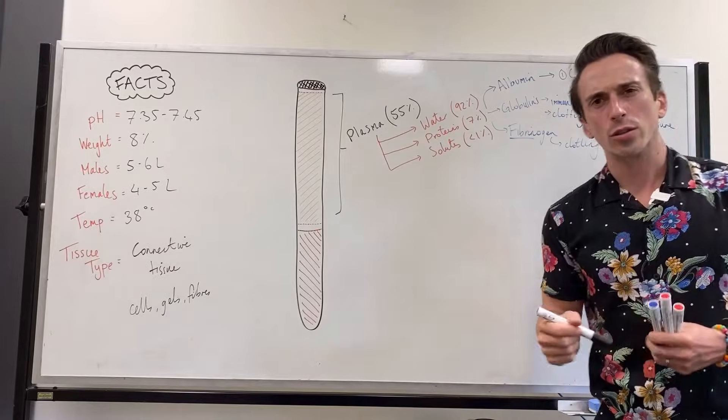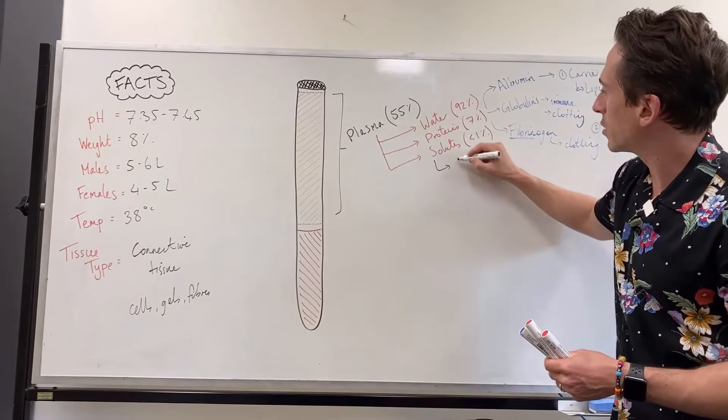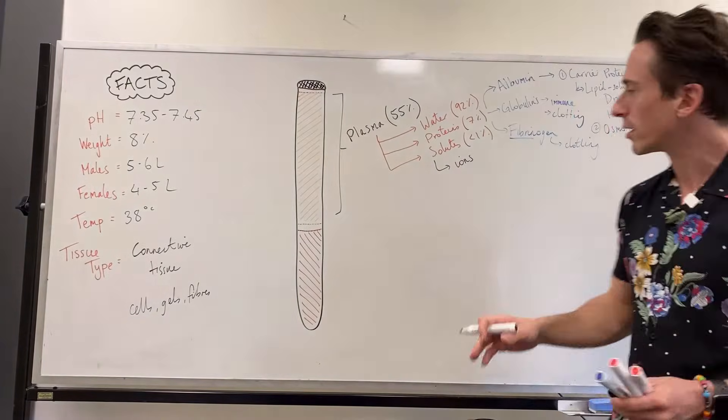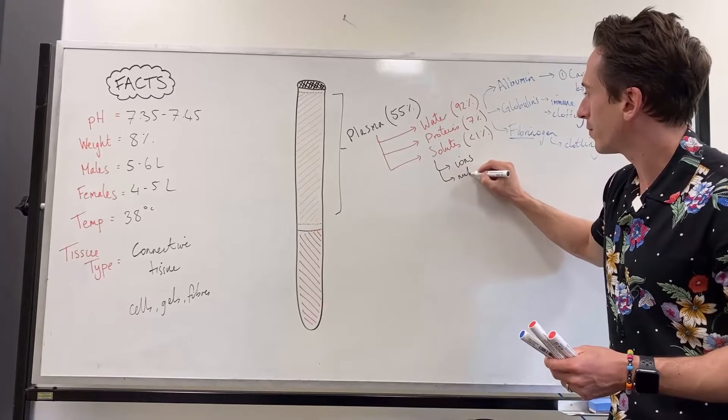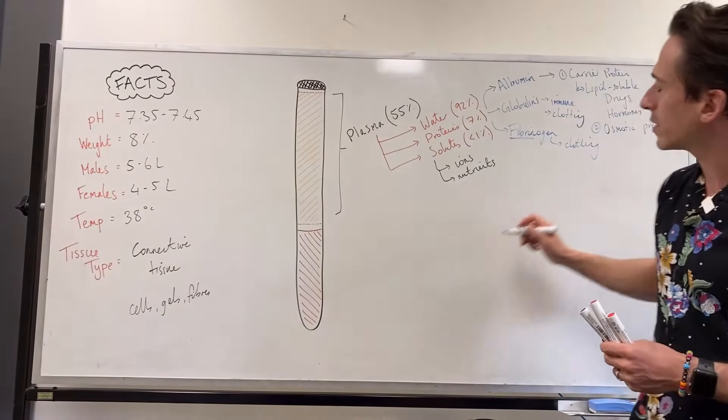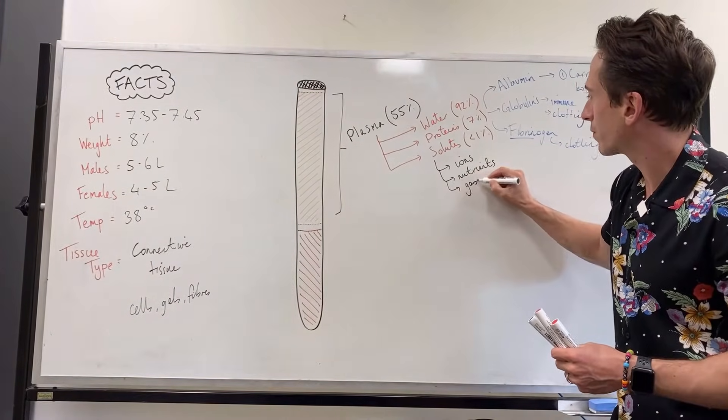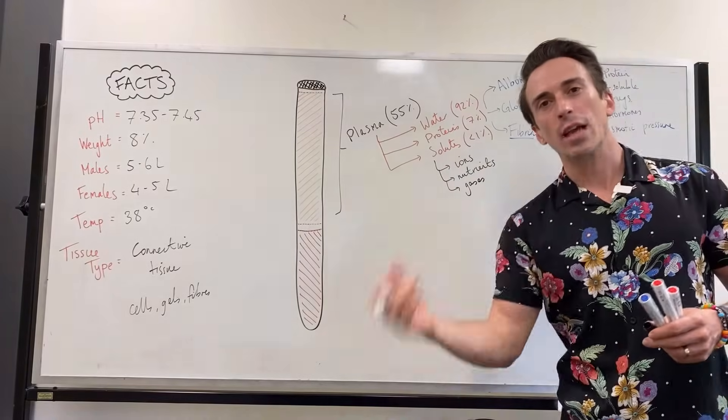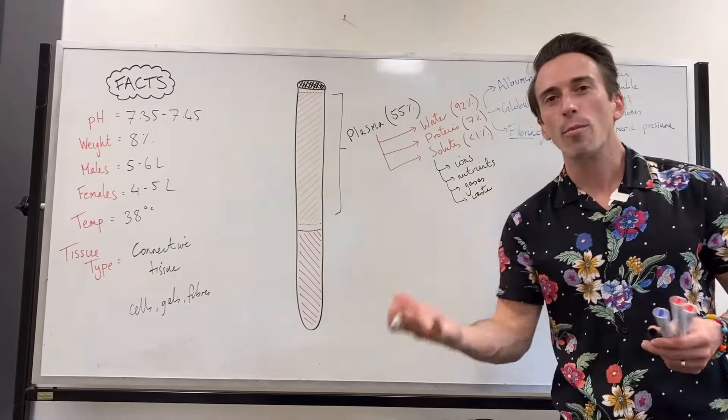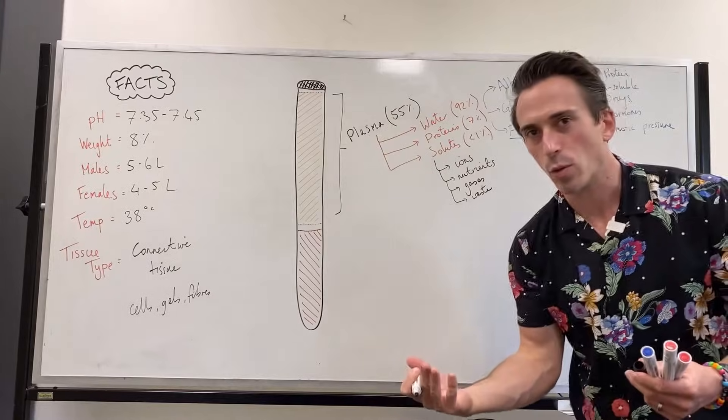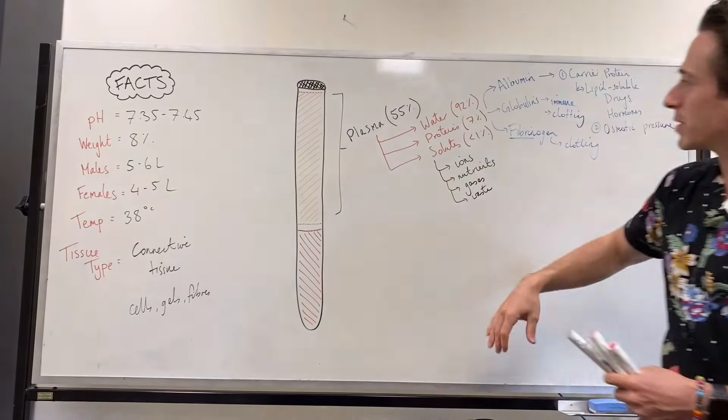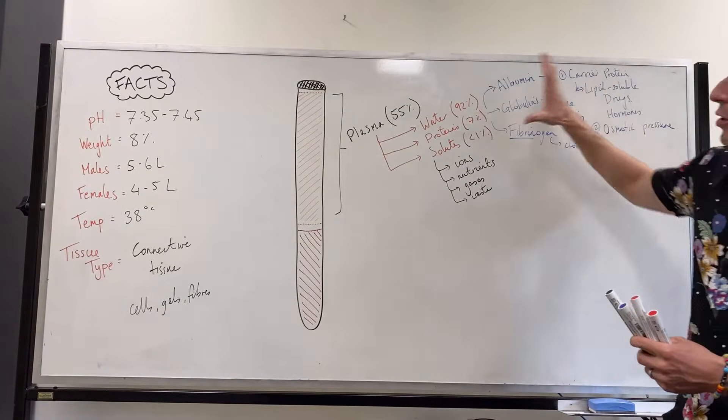What about solutes? What type of solutes do we have? Well, the solutes are going to be things like ions. And ions are sodium, potassium, magnesium, calcium, chloride, things like that. Nutrients. These nutrients may be glucose or amino acids or fatty acids, for example. Gases, gases like oxygen and carbon dioxide and nitrogen and waste, like uric acid or ammonia, for example. Metabolic waste is what we're referring to.